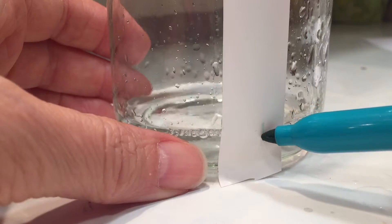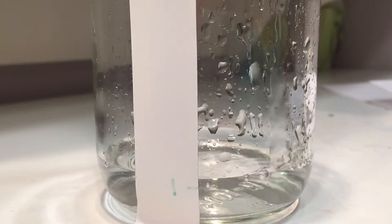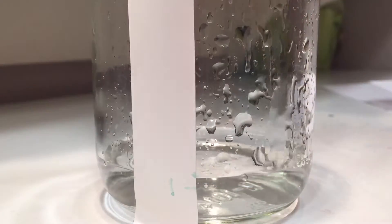So my permanent marker didn't work on my glass container so I went ahead and I got a little bit of tape and that way we can mark the different levels of water according to the time.